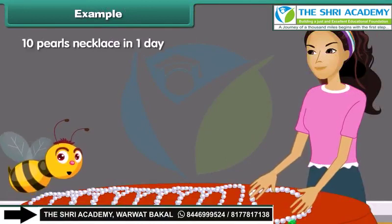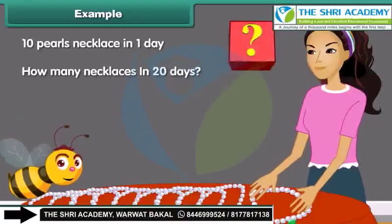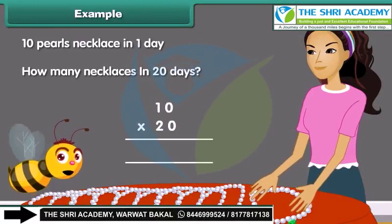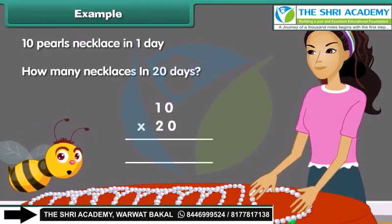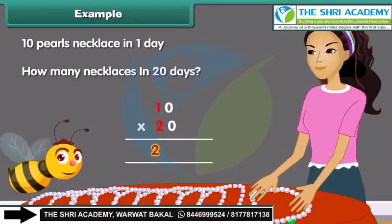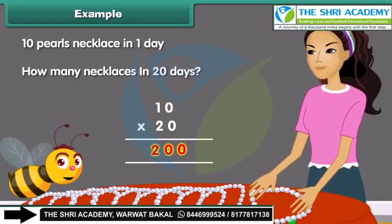Dinah makes 10 pearl necklaces in one day. In 20 days, she will make how many necklaces? We need to multiply 10 by 20. Step 1: multiply the numerals without zeros — 2 multiplied by 1 is equal to 2. Step 2: count and add the number of zeros to the right side of the answer. In this case we have two zeros, so the final answer becomes 200.